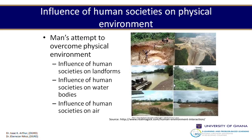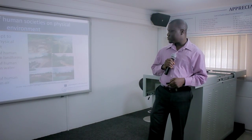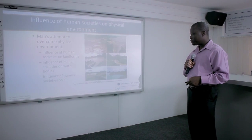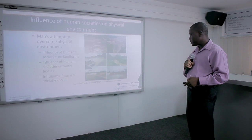We also look at the influence of humans on water bodies. Sometimes we pollute them, sometimes we dig into them or use them for transportation, and sometimes we harness water from these bodies for consumption and daily activities. Another influence of human beings is on air quality — looking at how human beings influence the quality of the air around them.